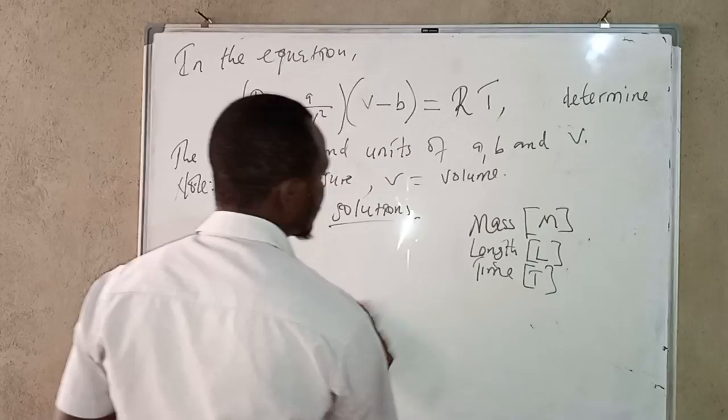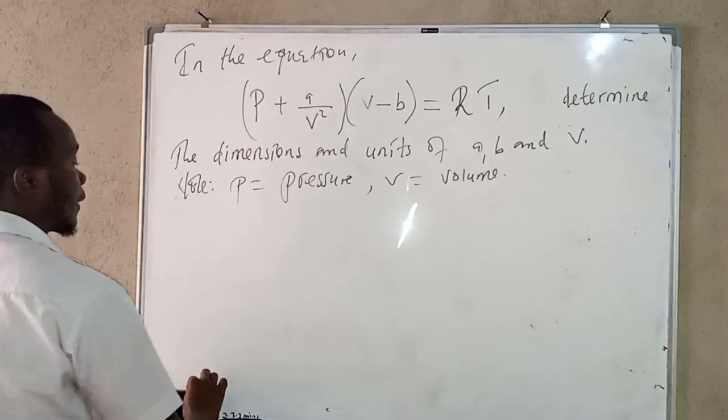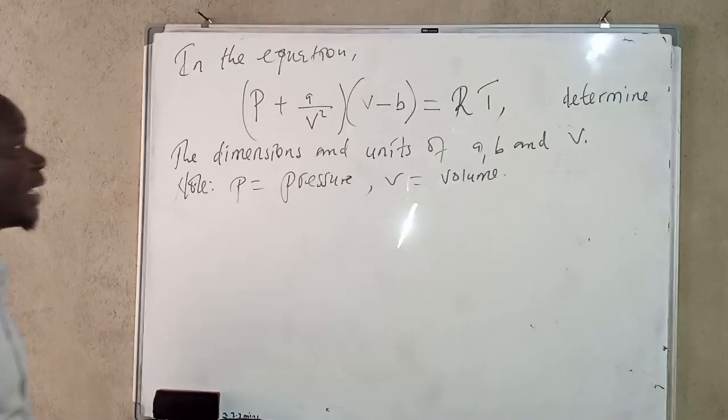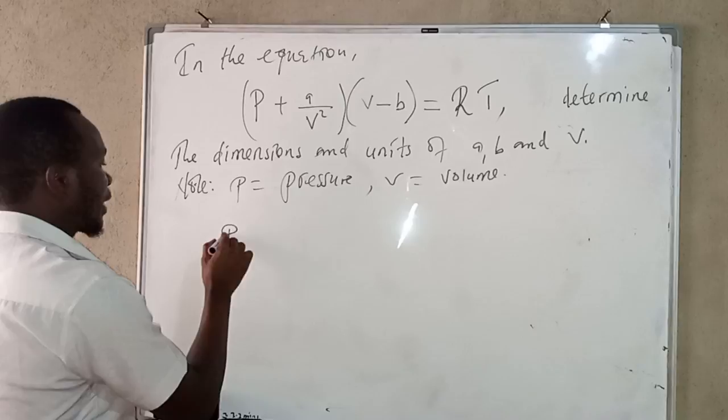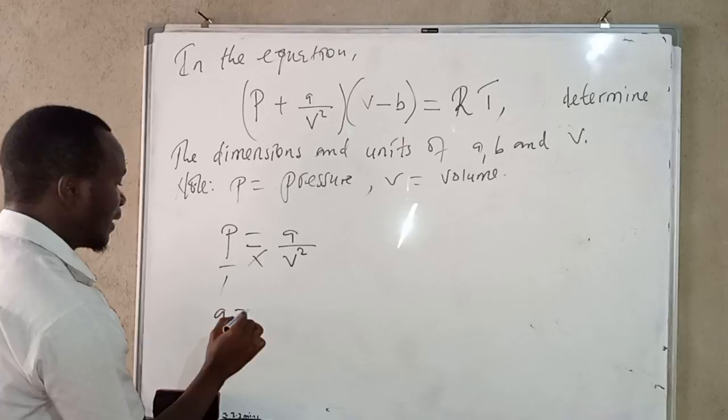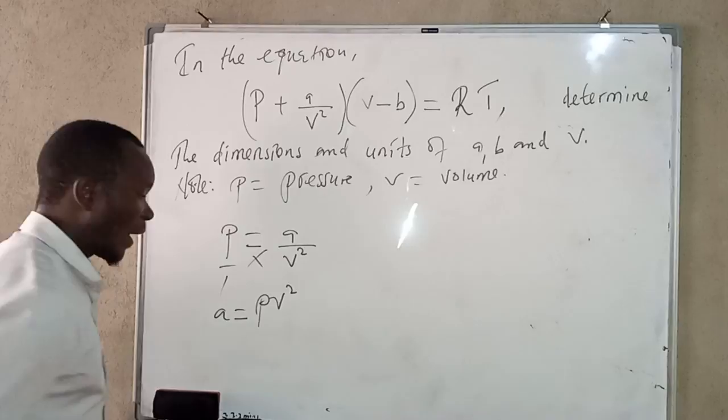Now let us proceed. From the principle of homogeneity, since P and A/V² are added together, they must have the same dimensions. So in terms of dimensions, we can write P equals A/V². Cross-multiplying, we get A equals P times V squared.